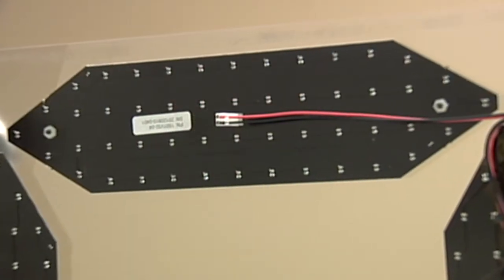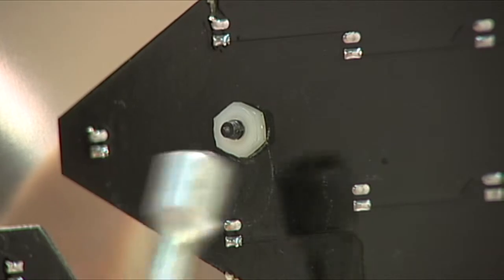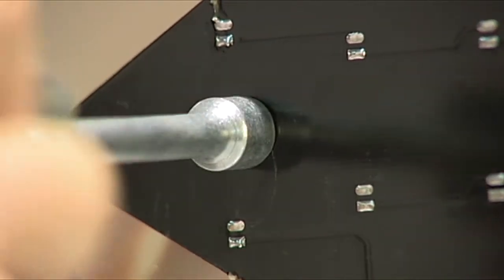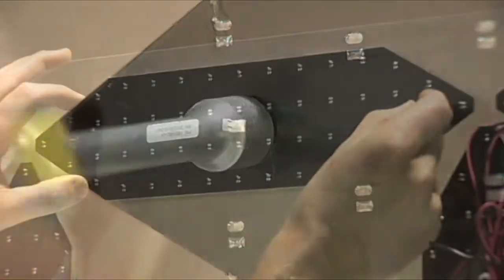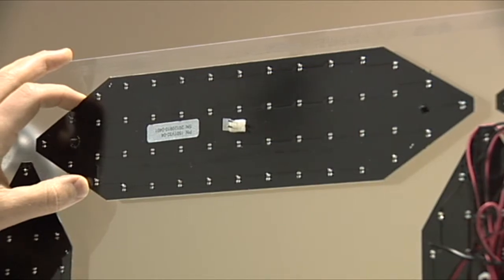Each vane is attached to the digit with two nylon nuts on the inside of the digit. Remove these nuts and swap out a new vane for the old one.